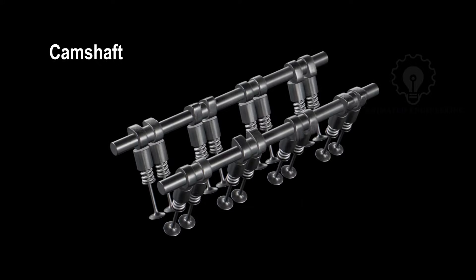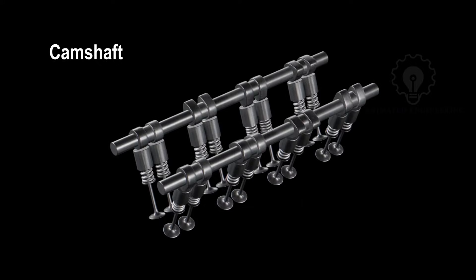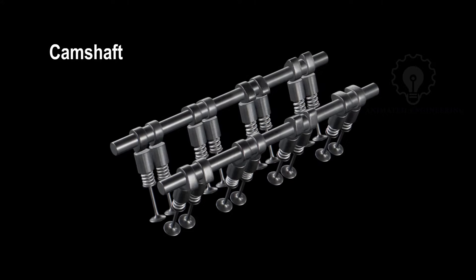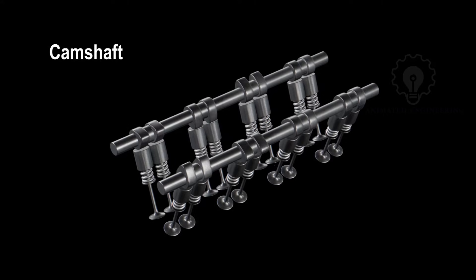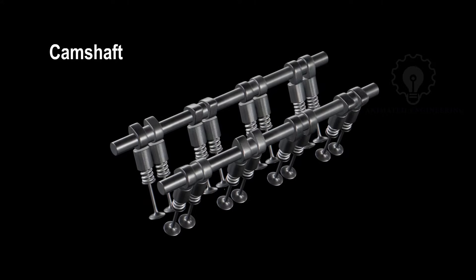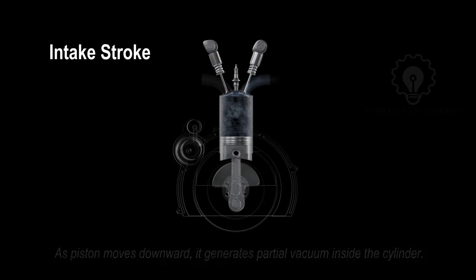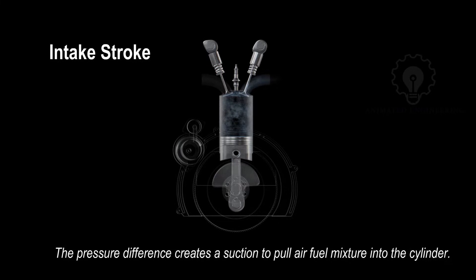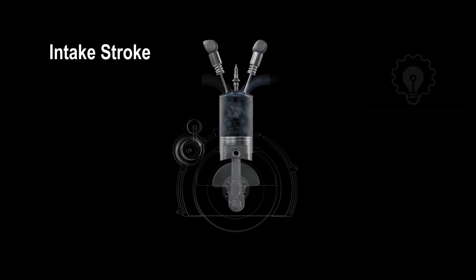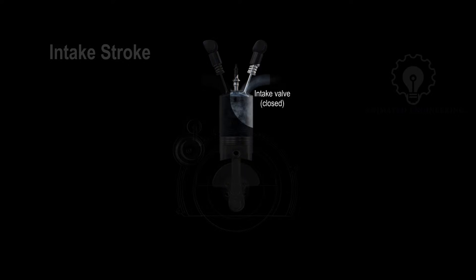The camshafts are designed to open or close the valves according to the corresponding strokes of each cylinder. As the piston moves downward, it generates a partial vacuum inside the cylinder. The pressure difference creates a suction which pulls the air-fuel mixture into the cylinder. At the end of the intake stroke, the intake valve changes from open to closed.